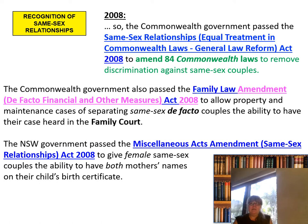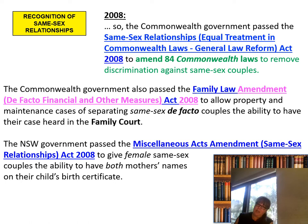When the Same-Sex Relationships Equal Treatment in Commonwealth Laws Act was passed, some of the ways that same-sex couples were discriminated against included not being able to access their partner's superannuation if they passed on, and not being recognised as a partner when it came to making medical decisions — with blood family members stepping in and saying, 'You're gay, you're not married, you can't visit your partner in hospital and we'll be making the decisions.' There was a lot of discrimination going on.